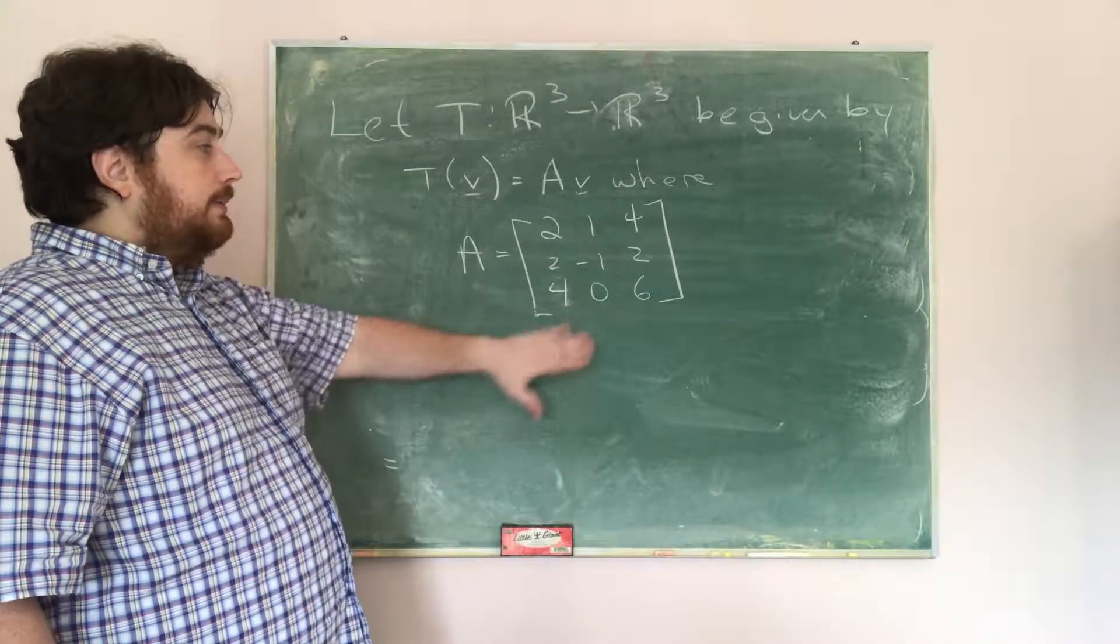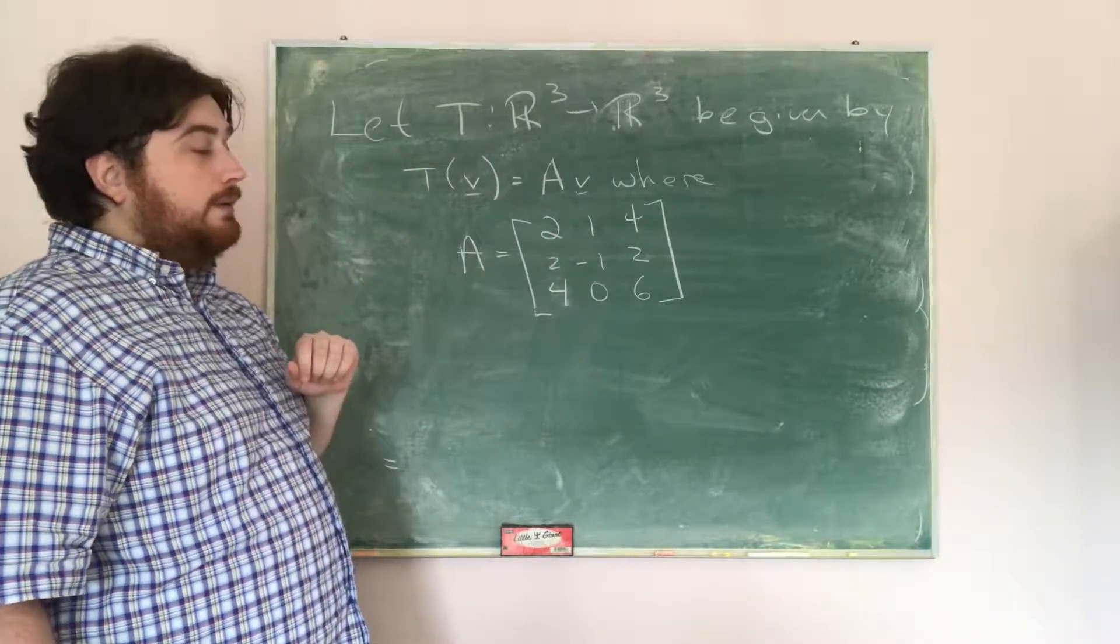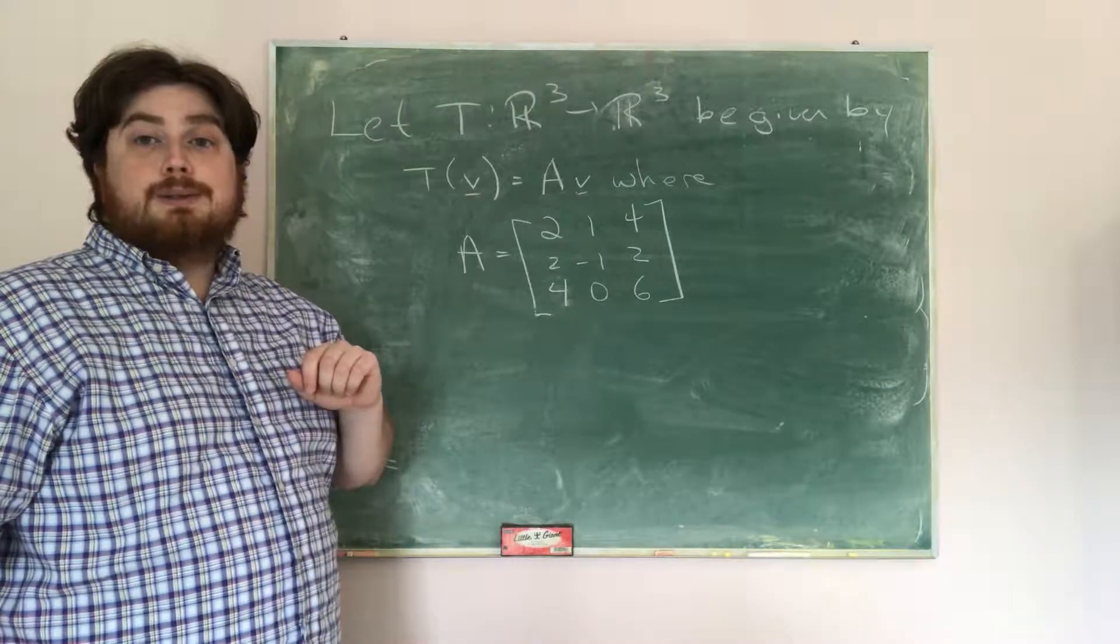let's suppose we have a linear transformation from R cubed to R cubed given by the image of V is A times V, where A is the matrix 2, 1, 4, 2, negative 1, 2, 4, 0, 6.